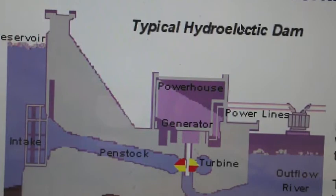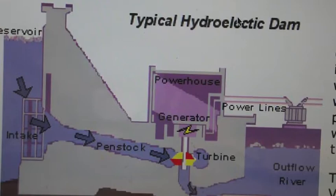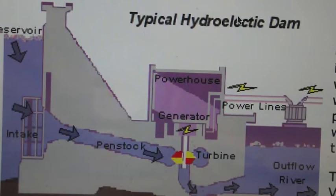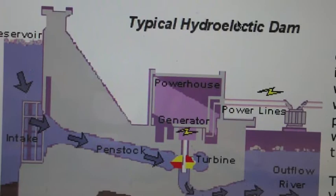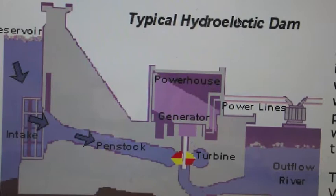Hydroelectric energy is produced by the force of falling water. Producing this energy relies on both the available flow and the height from which it falls. Water collects potential energy behind a high dam. It's transformed into mechanical energy when the water goes down the sluice and hits the rotary blades of the turbine. The rotation of the turbine spins electromagnets, which generate current in stationary coils of wire. Finally, the current is put through a transformer where the voltage is increased for long-distance transmission over power lines.